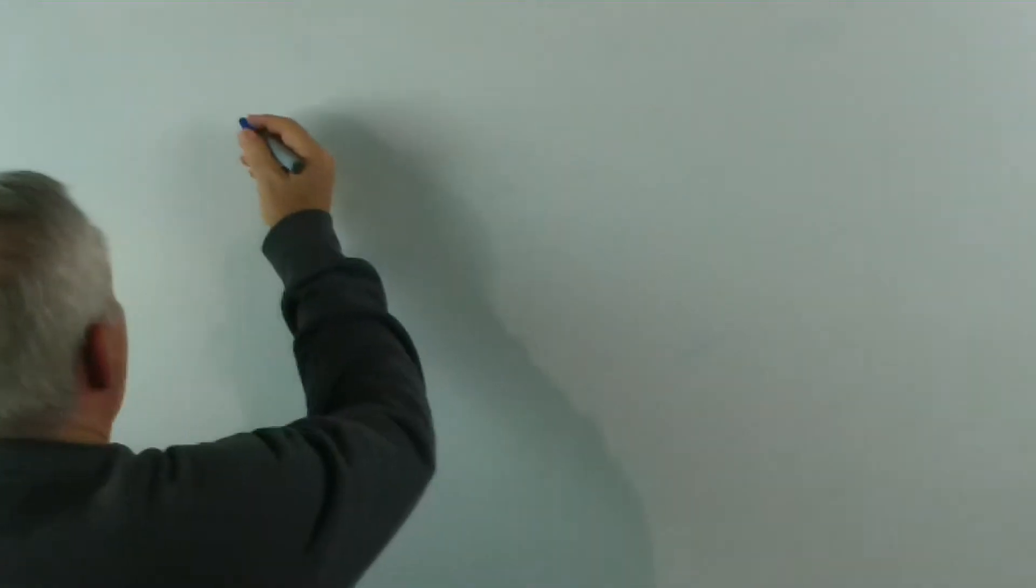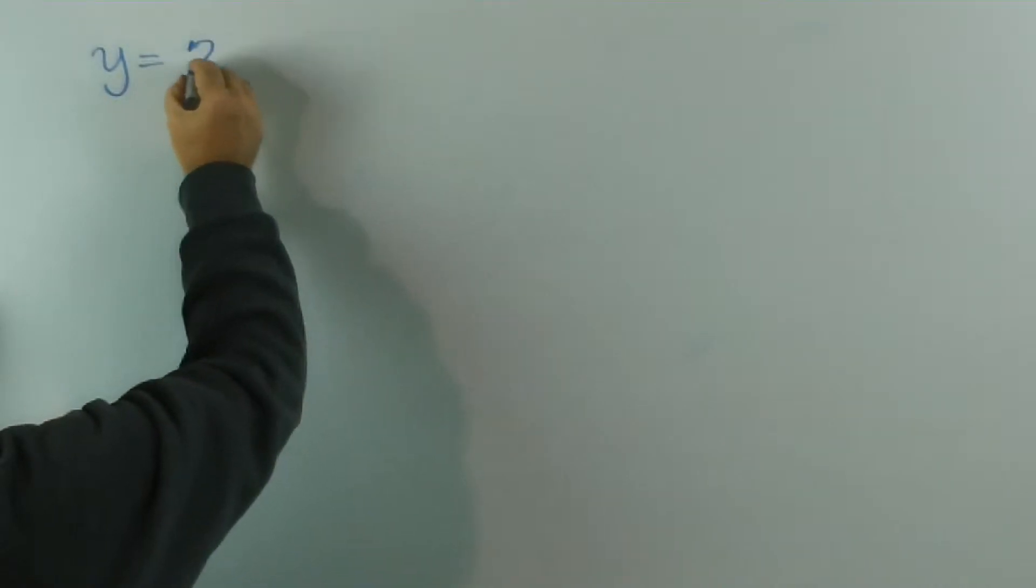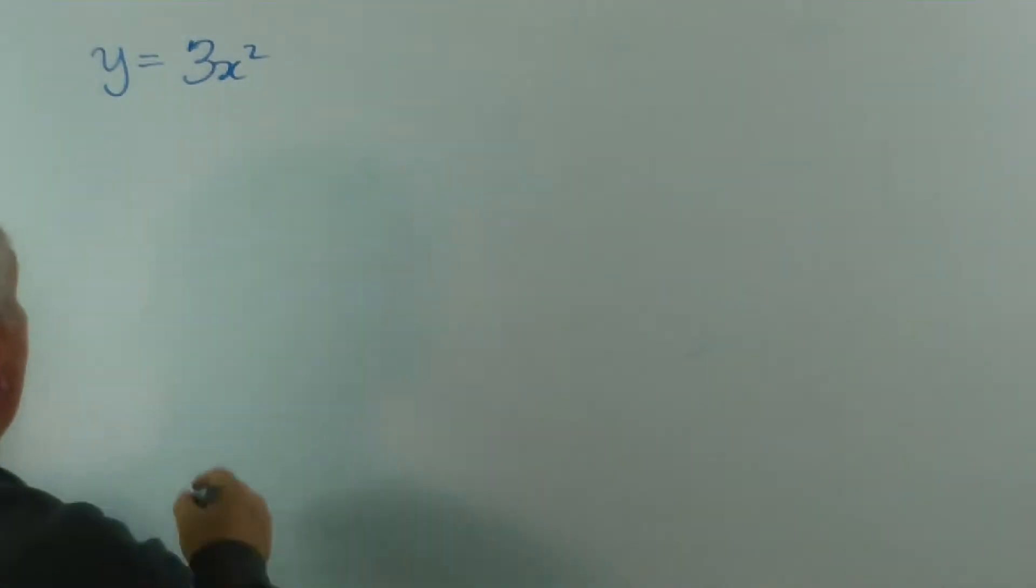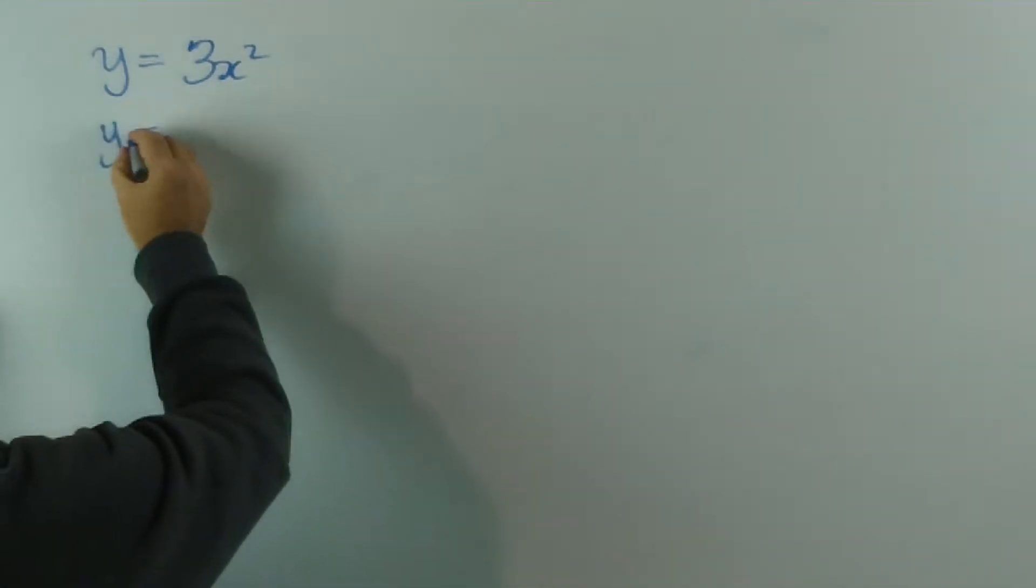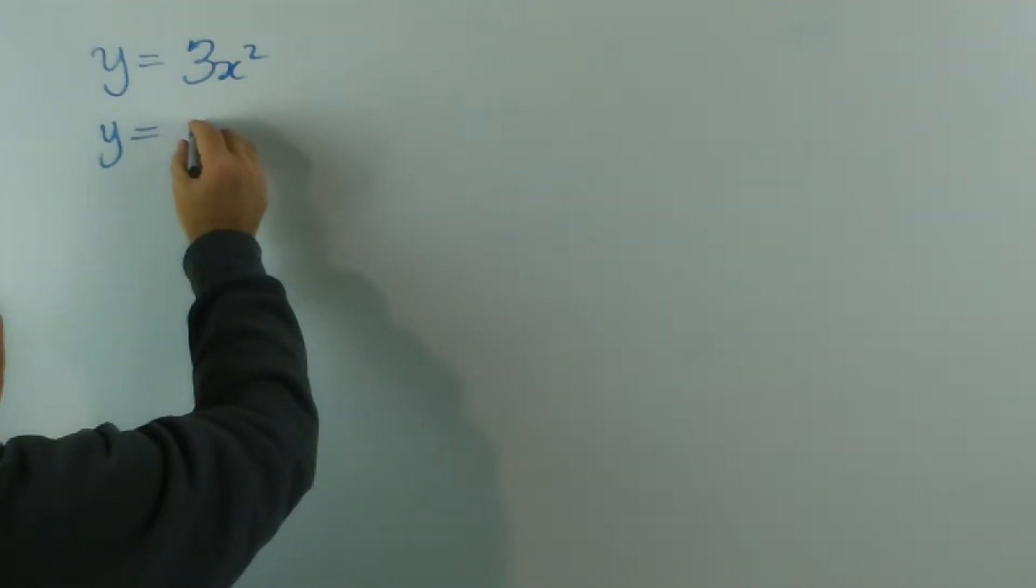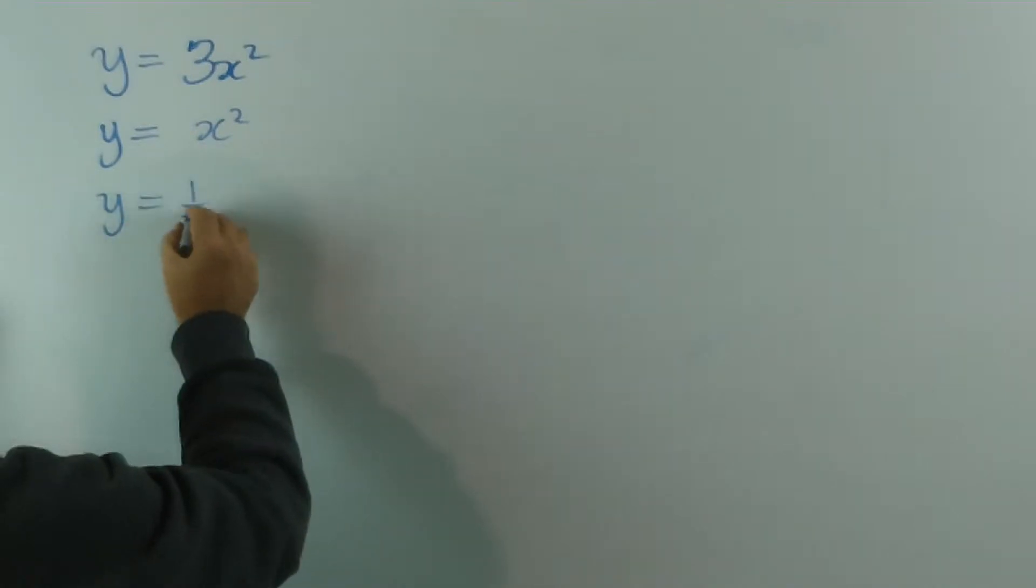You might recall from last video that we learned how to graph parabolas like this one, where we had a number in front of the x squared. What we didn't look at yet are negative ones, but we'll deal with that on another occasion.